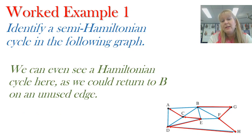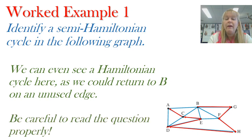We could even see a Hamiltonian cycle here. We could actually return to B on that unused edge. But it's very important that you read your exam question carefully because we weren't asked to. We were only asked to find a semi-Hamiltonian cycle, not a Hamiltonian cycle. So make sure you're reading your question carefully because if you'd gone all the way back to B again, you would lose marks.